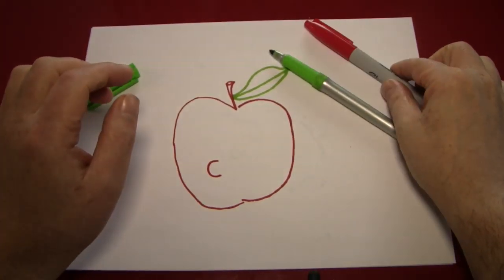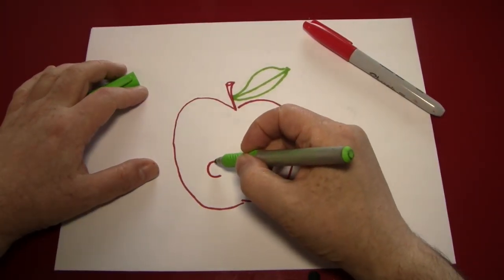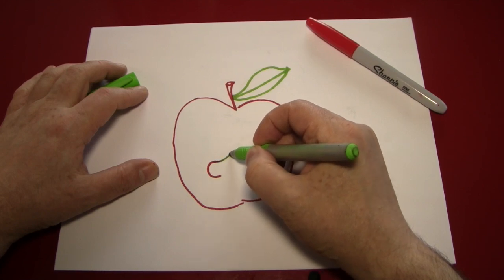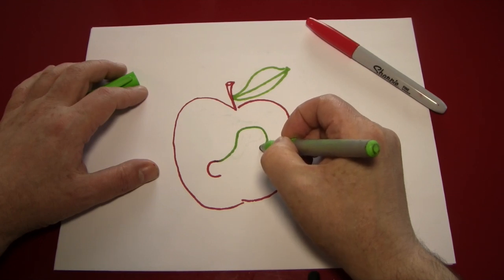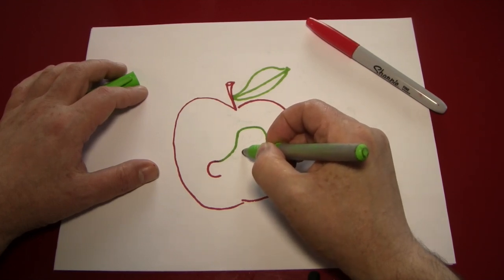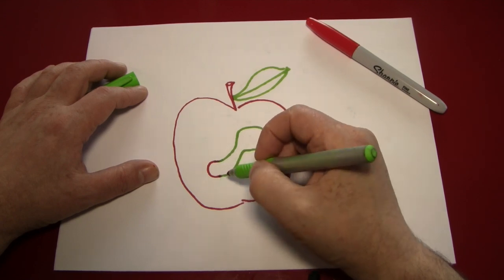Next, we're going to pick up the green pen again. And we're going to make the outline of a worm. Give him a big head, and keep his body about the same width of that C.